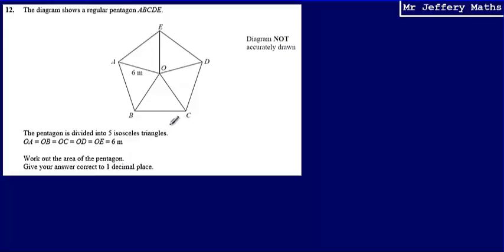Now, what we're going to do is work out the area of one of the triangles. All of these triangles are exactly the same size, so if I work out the area of one triangle—for example, triangle OBC—I can simply multiply that area by 5.